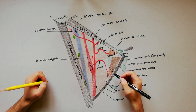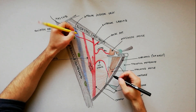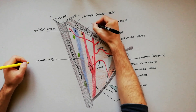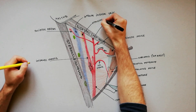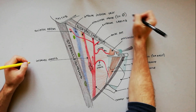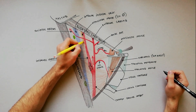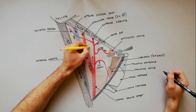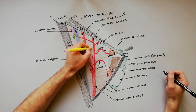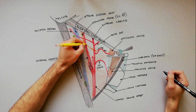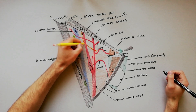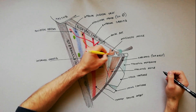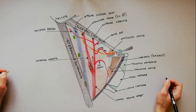We are now in a position to draw the last three cranial nerves in this region. The hypoglossal nerve descends between the internal jugular vein and internal carotid artery. Then, just above the level of the greater cornu of the hyoid bone, it turns forwards, crossing in front of both the internal carotid artery and external carotid artery.